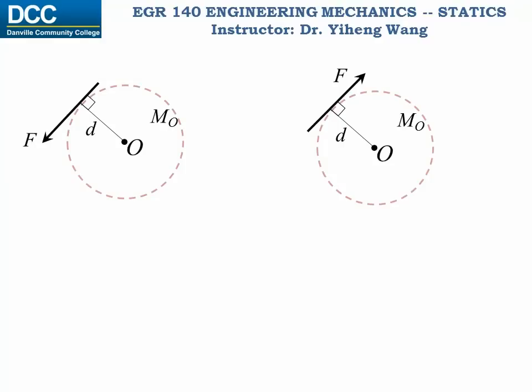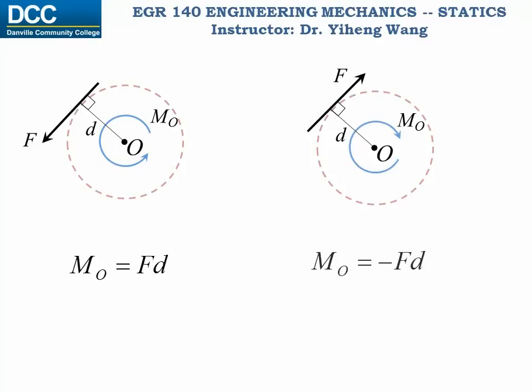With that understood, when we calculate the moment caused by a force F about a point O in a 2D plane: if the force creates a counterclockwise rotational effect about point O, the moment MO equals positive F times D. And if the force creates a clockwise effect about point O, the moment M equals negative F times D. In each case, D is the moment arm, which is the perpendicular distance from point O to the line of action of force F.